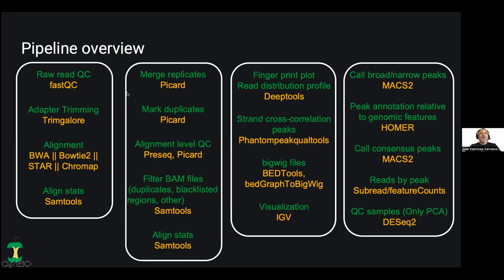Here is the pipeline overview. It starts with your FASTQ files and an input sample sheet that I will discuss during the presentation. There are quality control processes like FastQC, and adapters are removed with TrimGalore. Then alignments are performed. In version 1.2, the only aligner available was BWA, and now in the new version, three additional aligners will be available: Bowtie2, STAR, and Chromap.